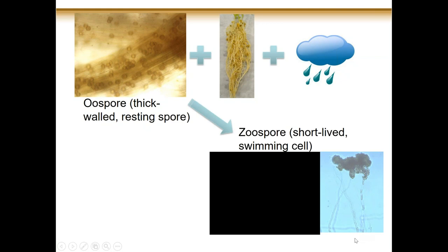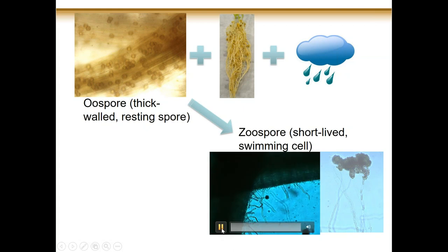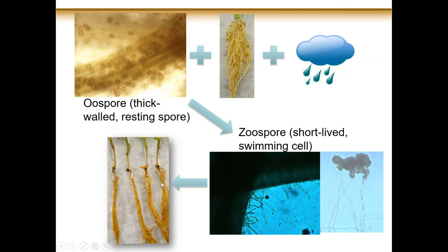The zoospores are attracted to pea and lentil roots. Once they start infecting, they can infect very quickly, and within seven to ten days can colonize and ramify through the whole root. Then there's not much nutrients left and they go back into dormancy, sitting there and waiting for the next pea or lentil crop.